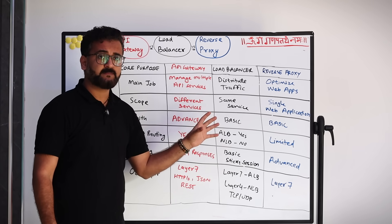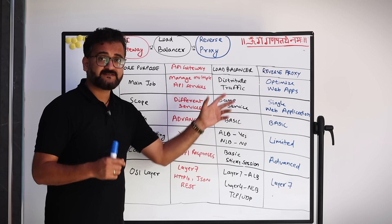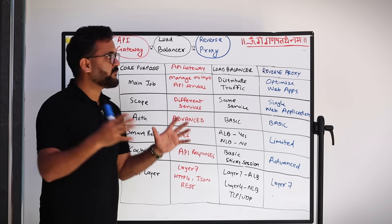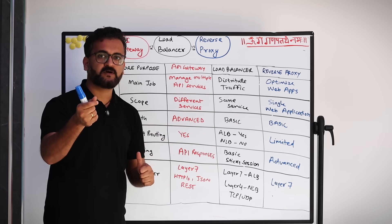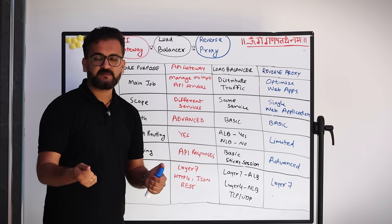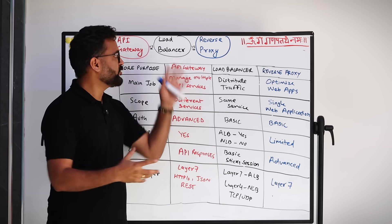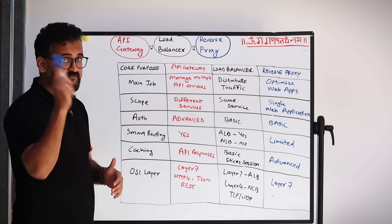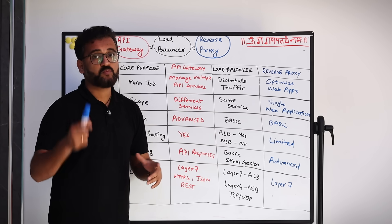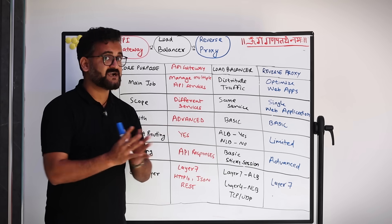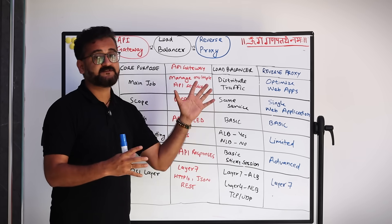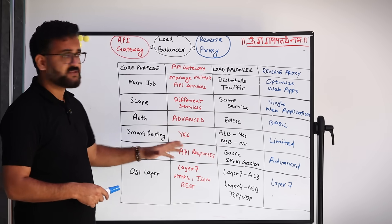As a disclaimer: don't take this comparison table as absolute — there are scenarios where a load balancer with certain configurations can do multiple things. At a generic level this comparison gives a good idea of when to choose what. Also note we've focused on microservices architecture; load balancers can also work in standard three-tier architectures, which is a different use case.